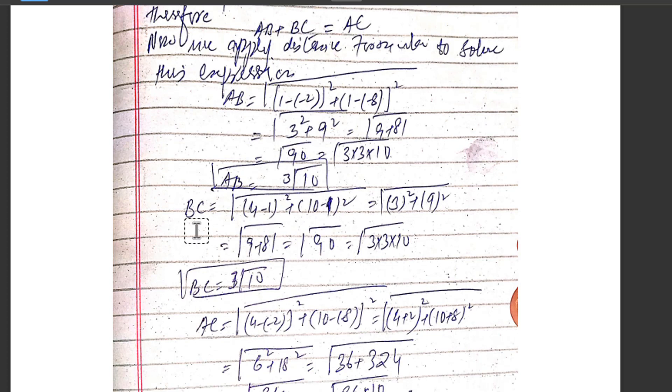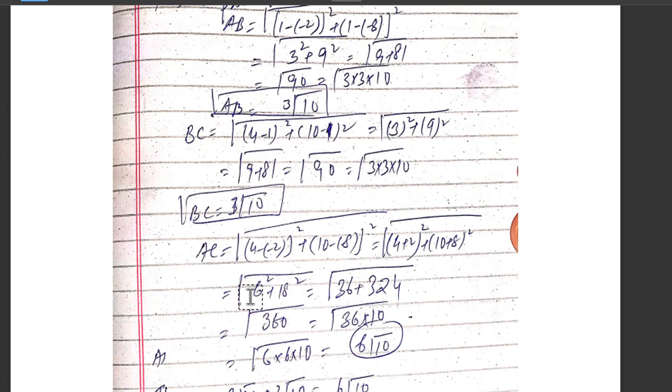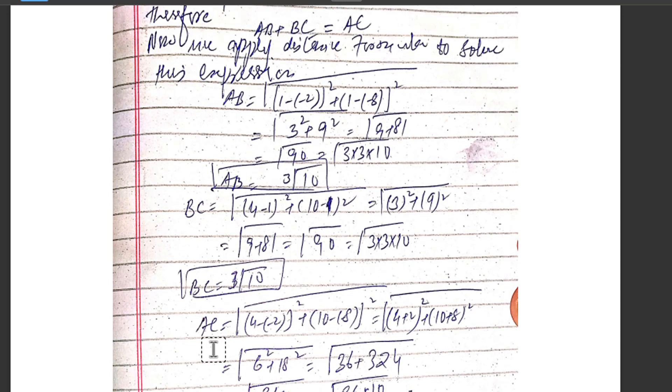Now come to BC. Using the distance formula: BC equals square root of [(4 - 1)² + (10 - 1)²] = square root of [3² + 9²] = square root of [9 + 81] = square root of 90. Again, this will be 3√10. We have a pair of 3s, so one 3 comes out of the square root, giving us 3√10.